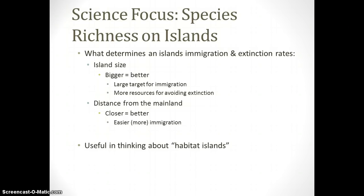Two things determine species richness on an island. First, the bigger the island, the more species it can support. Second, the closer it is to the mainland, the easier it is for new species to immigrate. Bigger islands are a larger target with more resources, reducing extinctions. Closer islands are easier to reach — species don't have to spend hours on the wing or floating on a log — making immigration much easier.